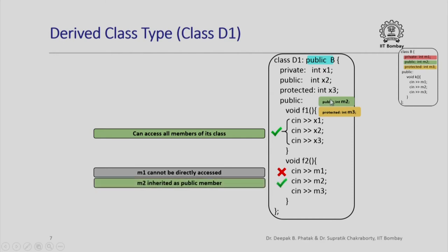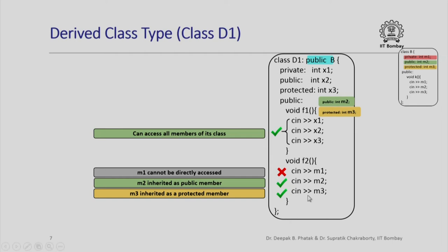In the main program with object d1 of class D1: d1.f1 is a public member function so it can be invoked, and f1 can access x1, x2, x3 of D1 — everything fine. For d1.f2, if f2 still contains the statement accessing M1, the compiler will complain about accessing a private member of the base class. Removing that statement leaves only M2 and M3 access, which compiles fine. d1.m1 gives a compilation error since M1 is private and not accessible from main either.